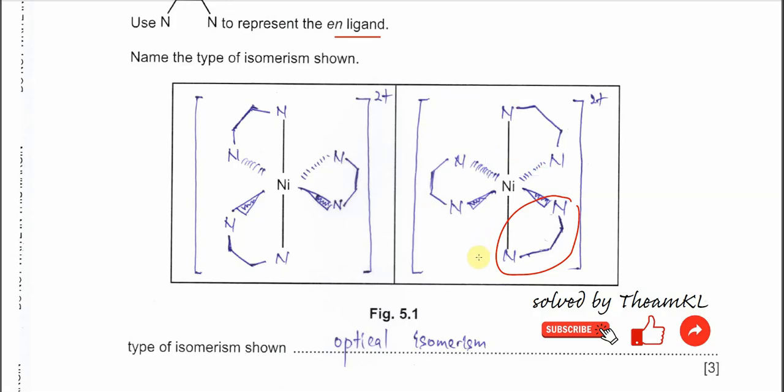You need to mention what is the type of isomerism shown. This one is optical isomerism. Why? Because they are mirror images, they are non-superimposable. So they are optical isomers. Means no matter how you rotate, let's say now you rotate 180 degrees, you will not get back the same thing.